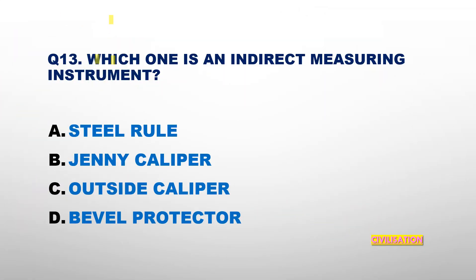Question number 13: Which one is an indirect measuring instrument? Options: Steel Rule, Jenny Caliper, Outside Caliper, or Bevel Protractor? The answer is Outside Caliper.